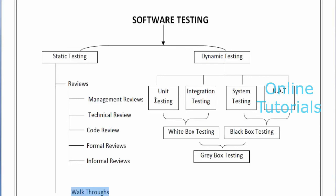How many functional types of testing and non-functional types of testing are there? As a functional tester, which part we have to concentrate on — testing is application dependent, time dependent, and situation dependent. Depending on that, we have to select the testing types and decide what types of testing to perform on that particular application. Those things come from the system testing part.